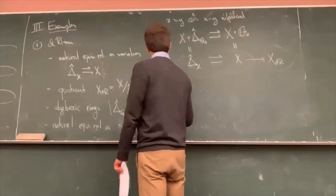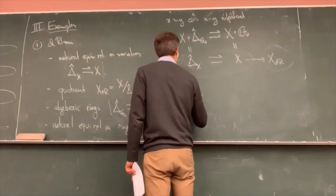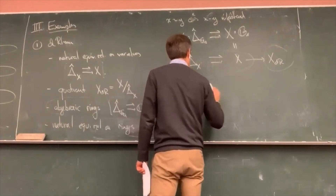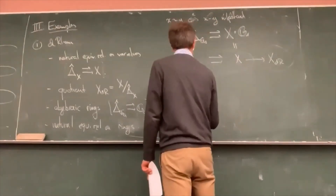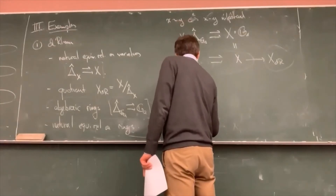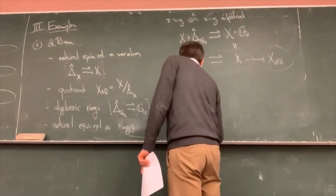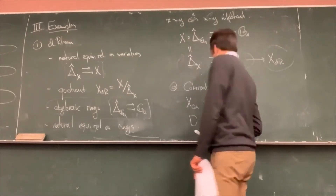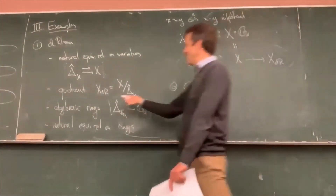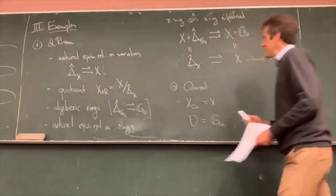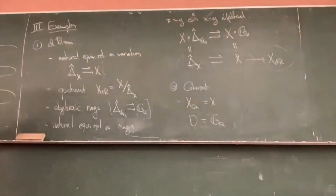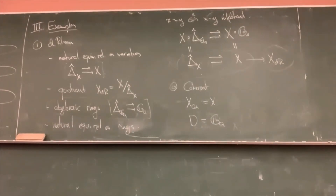Let me also do example zero, which is a little stupid: coherent cohomology itself. Here the algebraic ring will just be Gₐ — the identity functor — so we're not doing anything. It's not so impressive to reduce coherent cohomology of X to coherent cohomology of some scheme which happens to be X, but it is case example number zero.